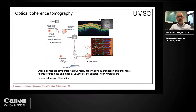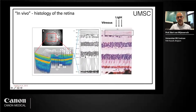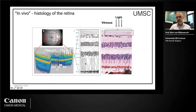OCT is just a way of structurally — ultra-structurally — having a look at the retina. You can see the different layers of the human retina. The most important ones for MS are the retinal nerve fiber layer — all the axons of the ganglion cells — and then the ganglion cell layer, the inner plexiform layer, and the inner nuclear layer.